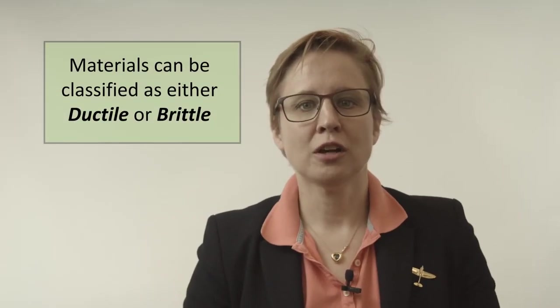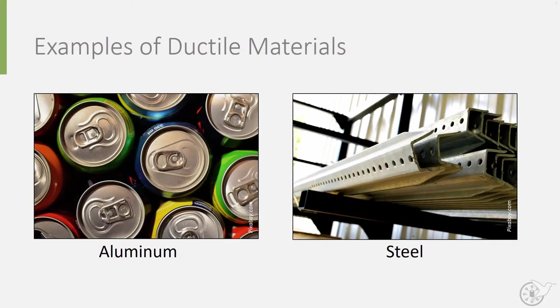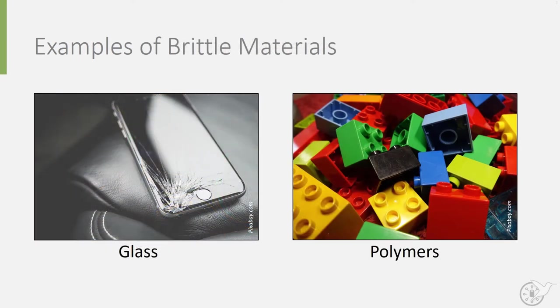Materials can therefore be classed as ductile or brittle depending on their behavior leading to failure. Other examples of ductile material are aluminum and steel. Examples of brittle materials are glass and polymers, such as the one used in carbon fiber composites.